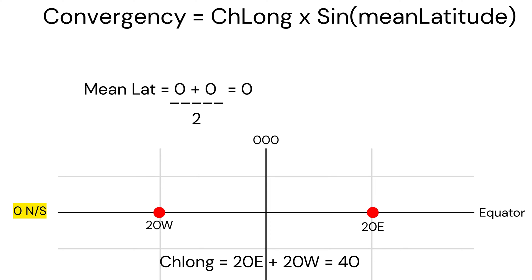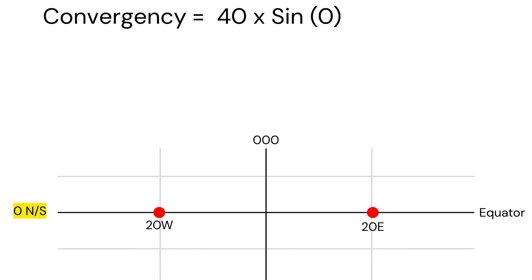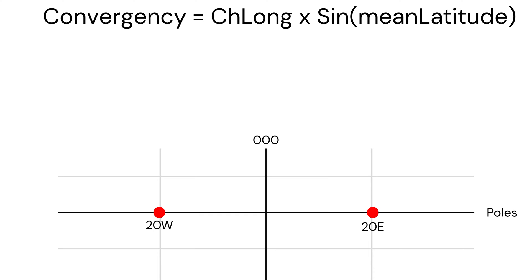If we substitute these values, we get convergency as 0. Similarly, let's quickly find the convergency for poles as well. Everything is the same, except the latitude is now 90 degrees.